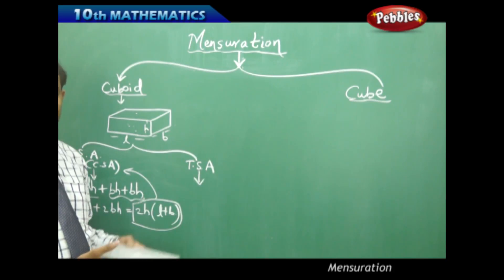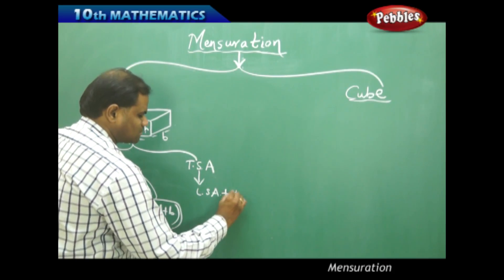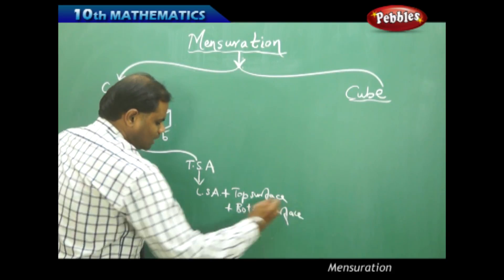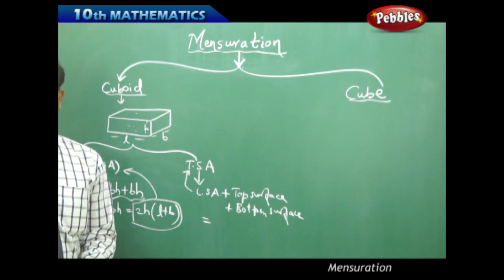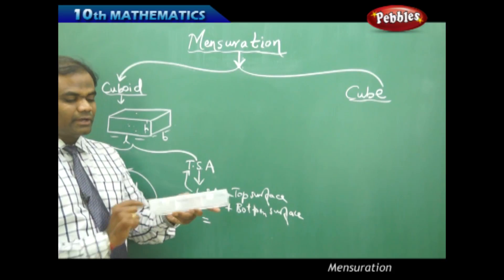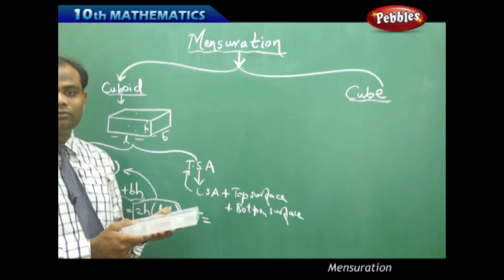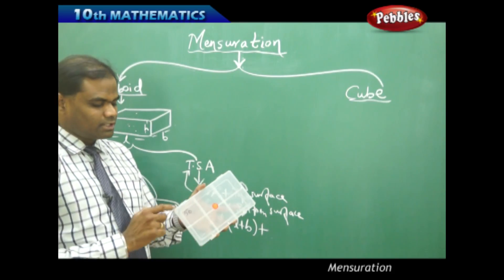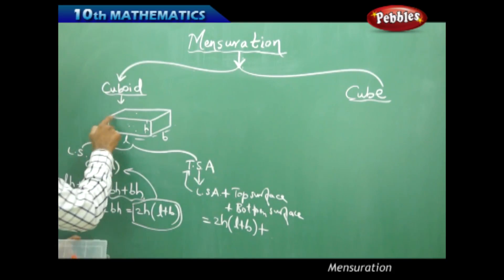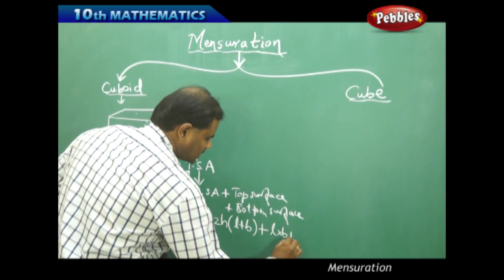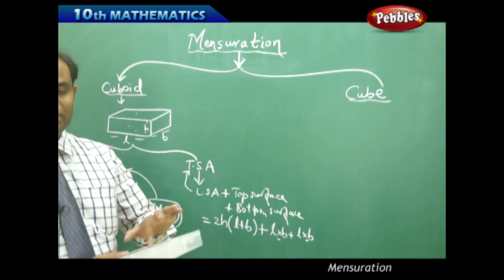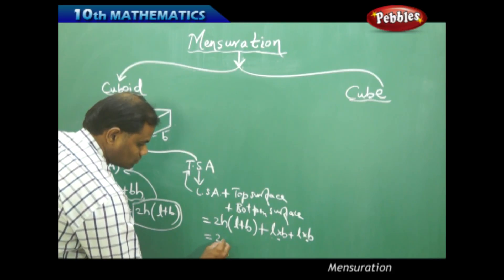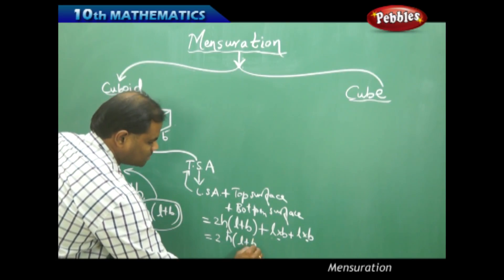The total surface area is the lateral surface area plus the top surface plus the bottom surface. Since the total surface area equals lateral surface area plus top and bottom, I get: 2H(L + B) plus the top surface which is a rectangle with length L and breadth B, giving LB, plus an equal area LB for the bottom. This simplifies to 2H(L + B) + 2LB.